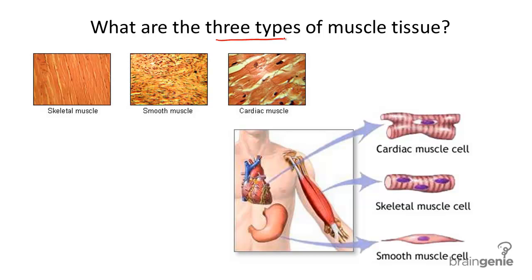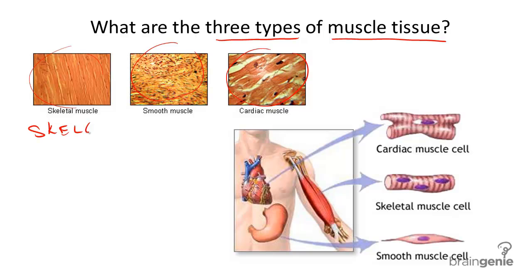What are the three types of muscle tissue, and how can we distinguish the different types of muscle tissue if we were to look in a microscope? The three types of muscle tissue are called skeletal, smooth, and cardiac muscle.